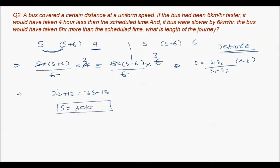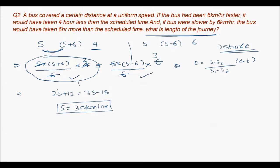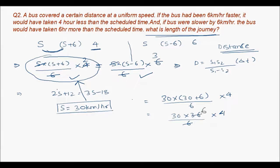Now they ask for the length of the journey — the distance. Substituting s = 30 into equation 1: d = 30×(30+6) / 6 × 4 = 30×36 / 24 = 1080/24 = 720 × ... actually 30×36 = 1080, divided by 24 = 45 × ... giving 720 km. So the answer is 720 km.